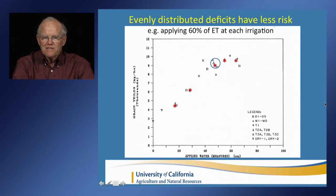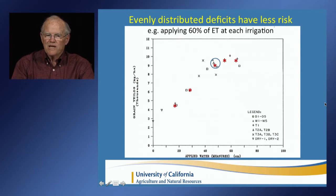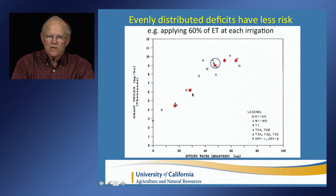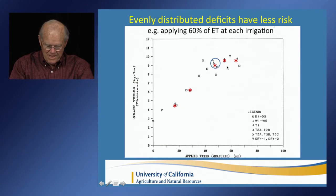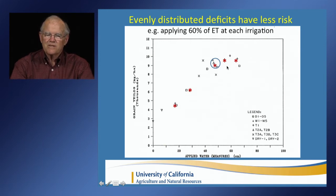As for distributing deficits evenly — looking at the same data set — the red points represent deficits starting at no deficit at all (100% irrigation), then 80% irrigation meaning 80% of ET was applied at each irrigation, then 60%, 40%, and 20%. At the 60% level, some treatments reached higher yields and a few lower. The point is that irrigating at some fixed percentage of ET is a reliable strategy — in this case a 40% deficit with each irrigation — meaning you don't have to worry about serious reductions in yield.